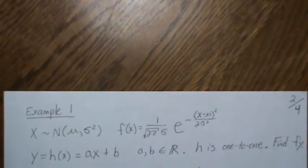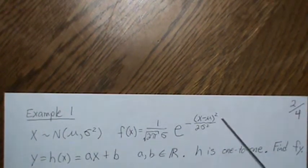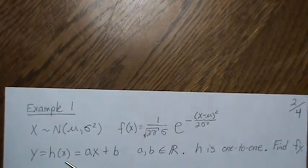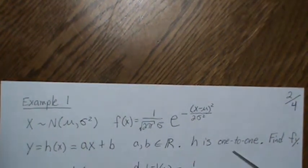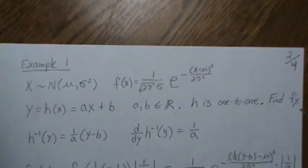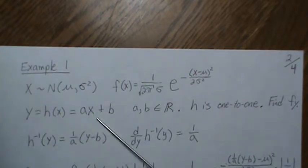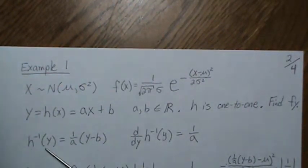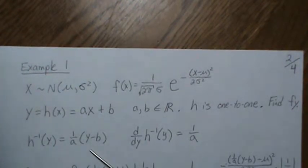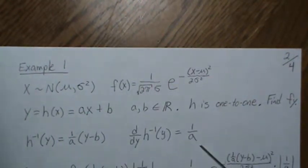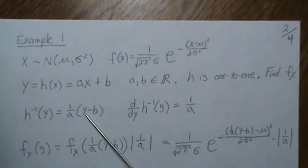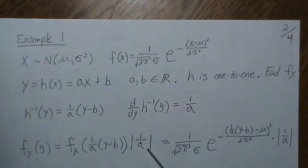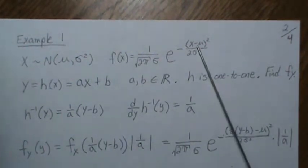Let's look at a quick example. Let X be Normal(μ, σ²) with its standard PDF. We apply a linear transformation Y = AX + B where A and B are real. H is one-to-one in this case. To find F of Y, we back-solve for X, giving X as the inverse function of Y: X = (Y − B)/A. Taking the derivative with respect to Y gives 1/A, which is part of the Jacobian. So F of Y equals F of X with the inverse function plugged in, times the absolute value of the Jacobian. Substituting gives the resulting expression.